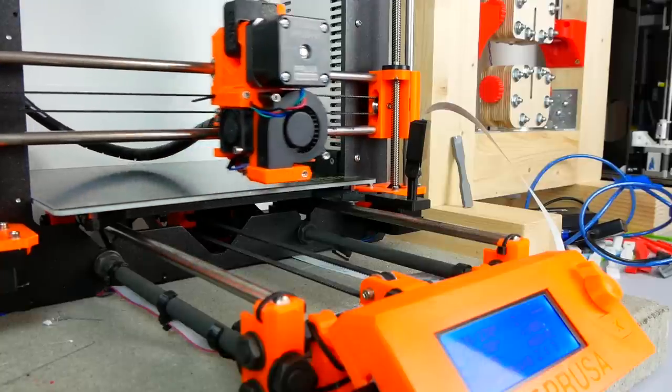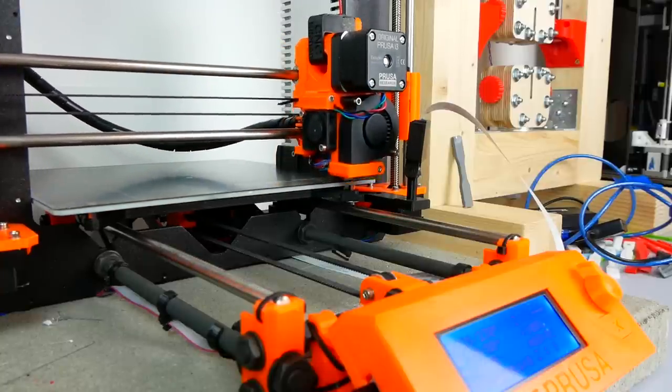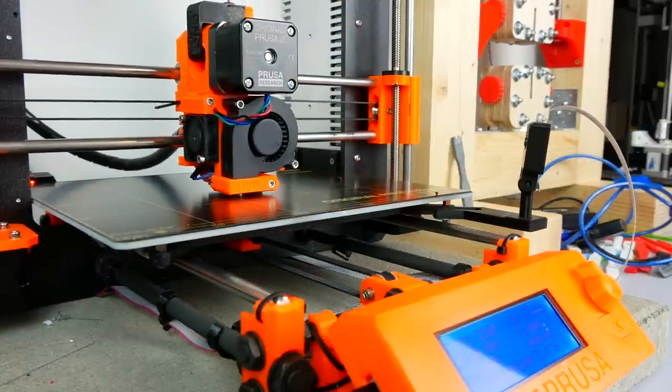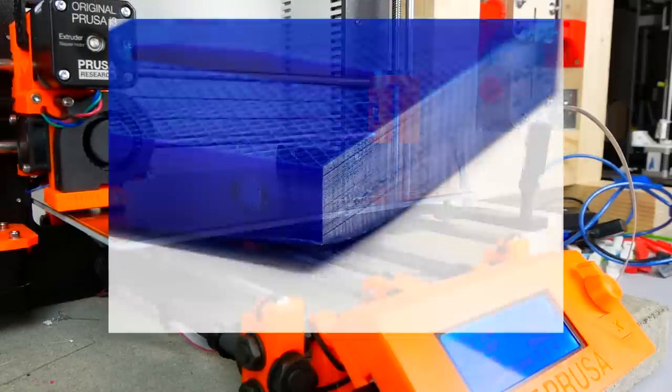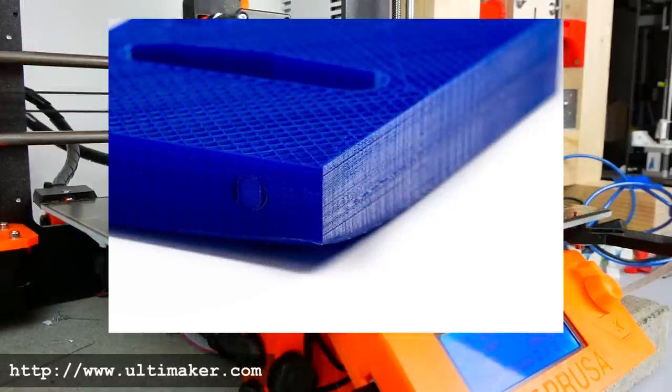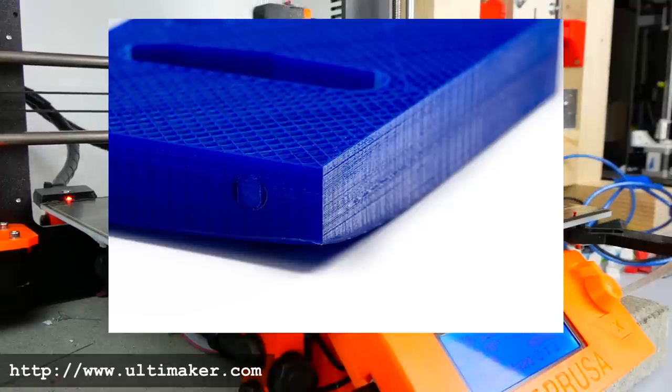There are two reasons for that, stress relief and crystallization. Every part you print will have internal stresses due to the temperature difference during the print. Everybody who has already printed a large part which warped will know that. These stresses are relieved during the annealing and lead to some warping.